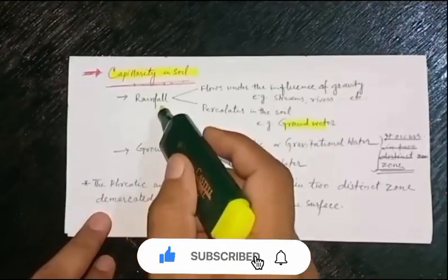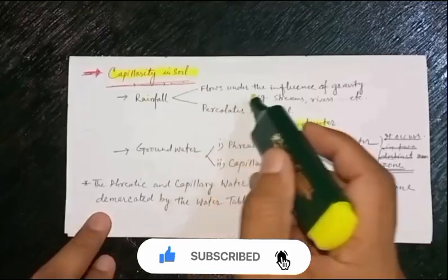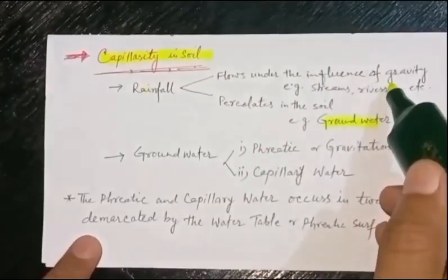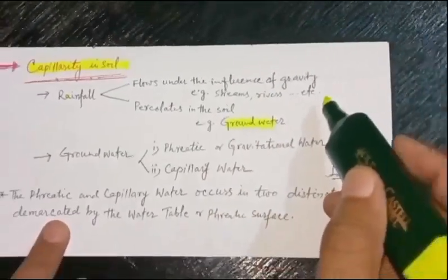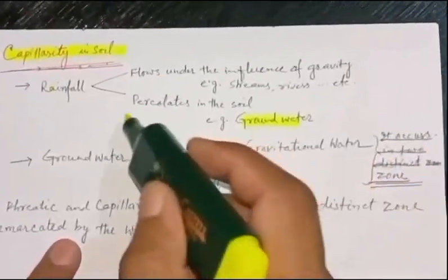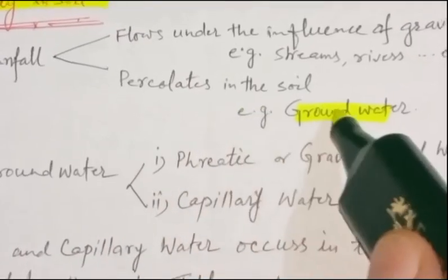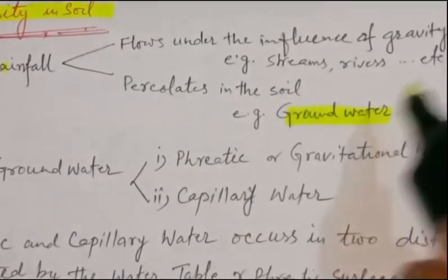When rainfall occurs, it may flow under the influence of gravity, for example in streams and rivers, or it may percolate into the soil and form groundwater.